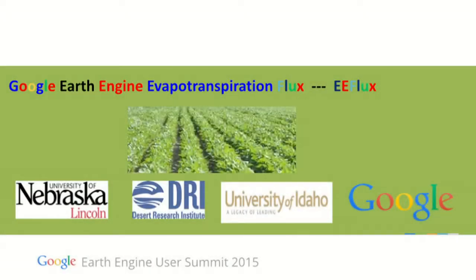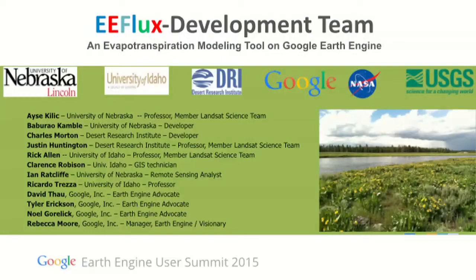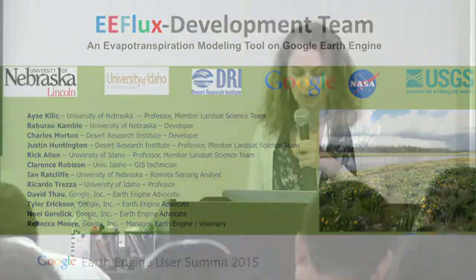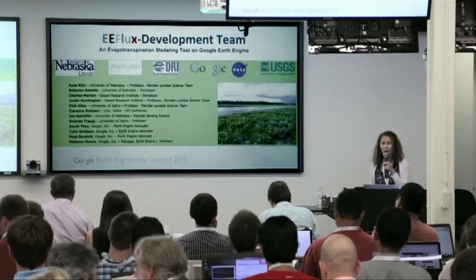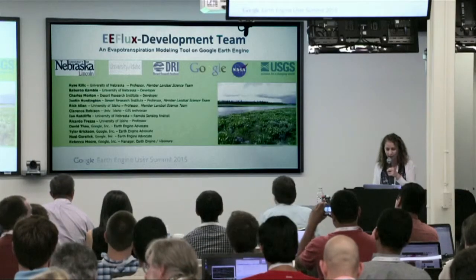I'm from University of Nebraska-Lincoln, and I'm going to talk about Google Earth Engine Evapotranspiration Flux — Earth Engine Evapotranspiration Flux, or EFLUX. For those who don't know what ET is: evapotranspiration is the summation of transpiration from vegetation and evaporation from soil and water.